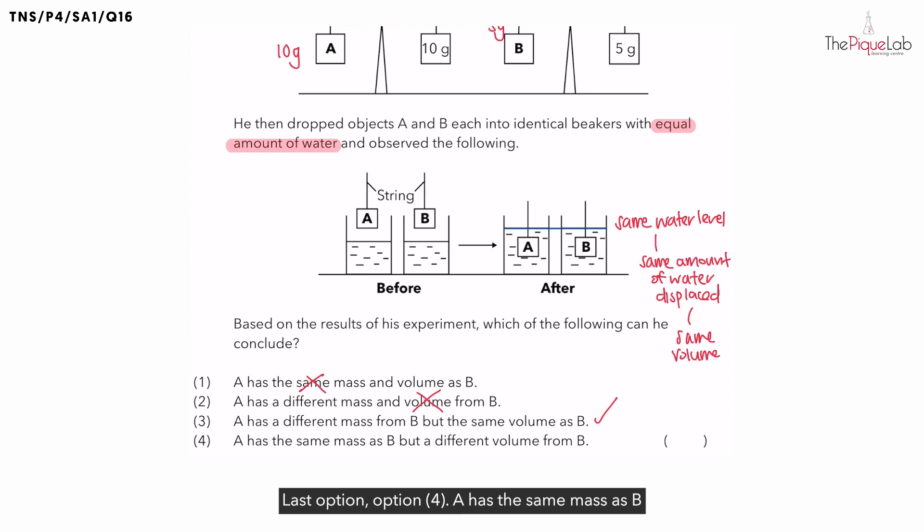Last option. Option 4. A has the same mass as B, but a different volume from B. Is this statement true? No. We mentioned previously that objects A and B do not have the same mass, and that both objects have the same volume. Therefore, the correct answer for this question should be 3.